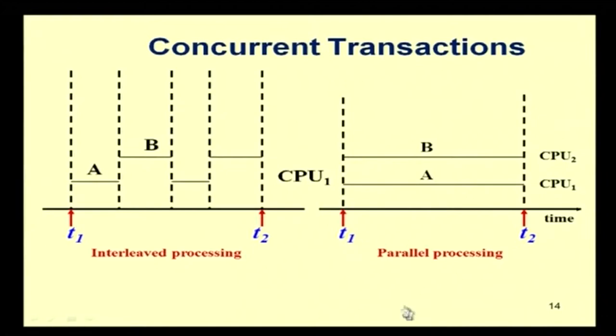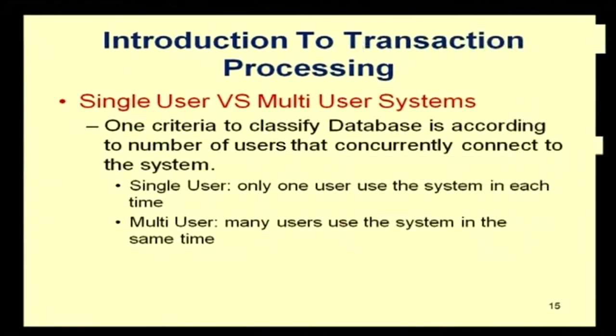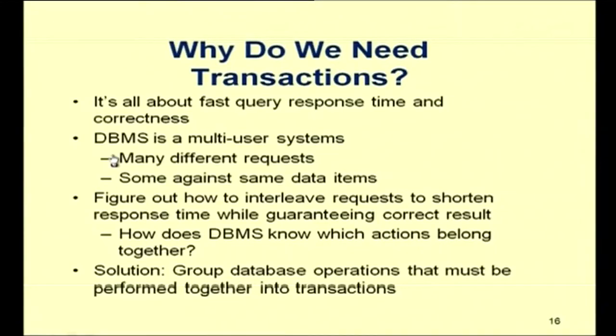In parallel processing, two CPUs handle two transactions simultaneously. Why do we need transactions? It is all about fast query response time and correctness — we are very concerned about the consistency of the database, otherwise no one will use it. At the same time, a database must respond to user queries in an efficient and fast way.